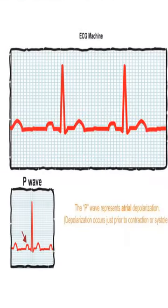The P wave represents atrial depolarization. Depolarization occurs just prior to contraction, or systole.